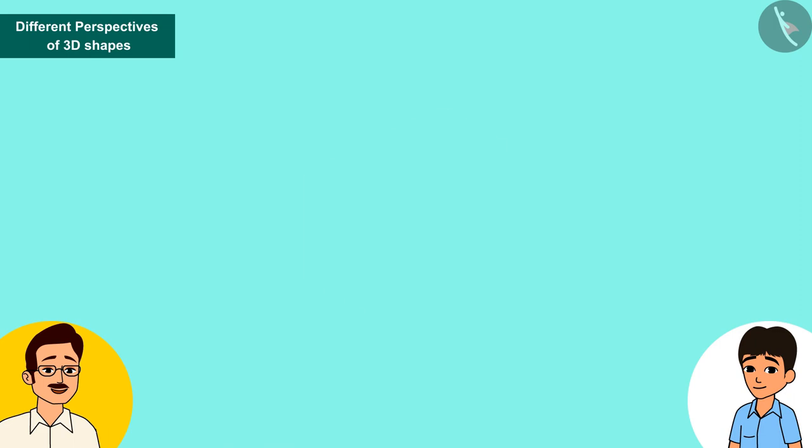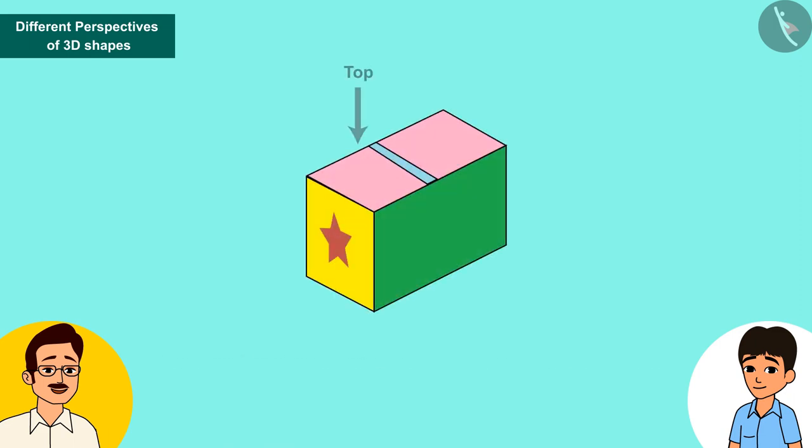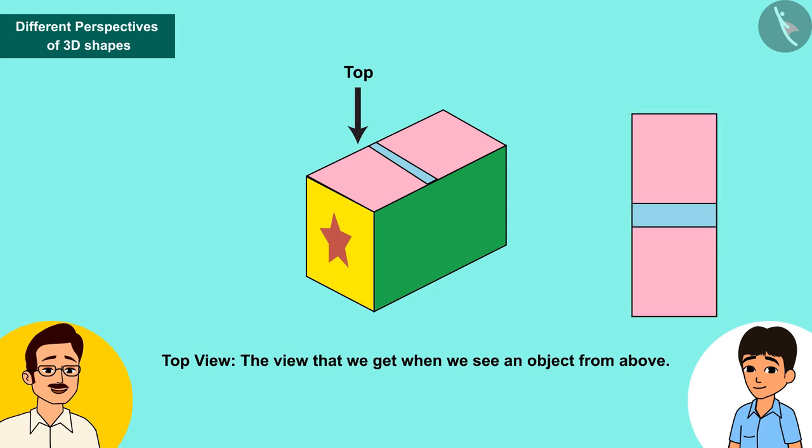Well done! The view that we get when we see an object from above is called top view.